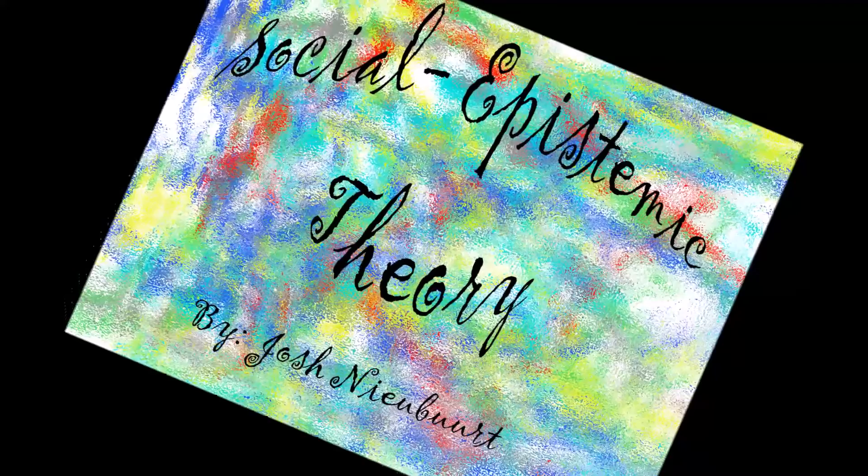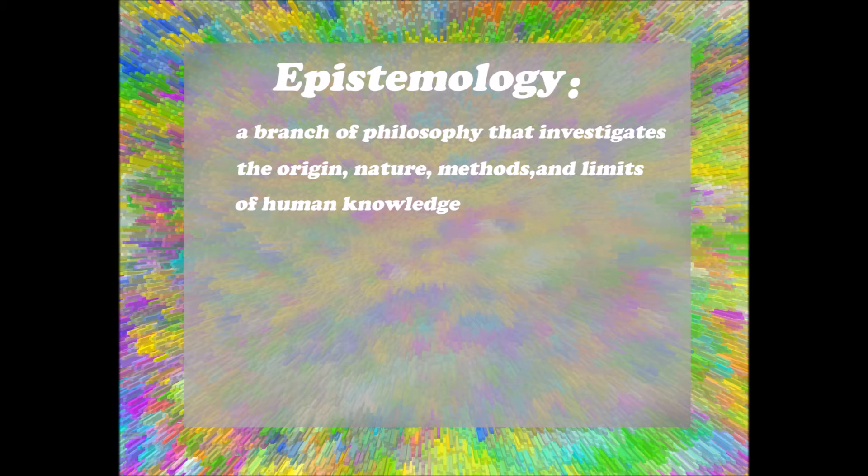To begin to understand the social epistemic theory of writing, we must first understand a few words and ideas. These words will help guide us in constructing our own thoughts about this theory. The first word is epistemology. It is a noun, which means a branch of philosophy that investigates the origin, nature, methods, and limits of human knowledge.